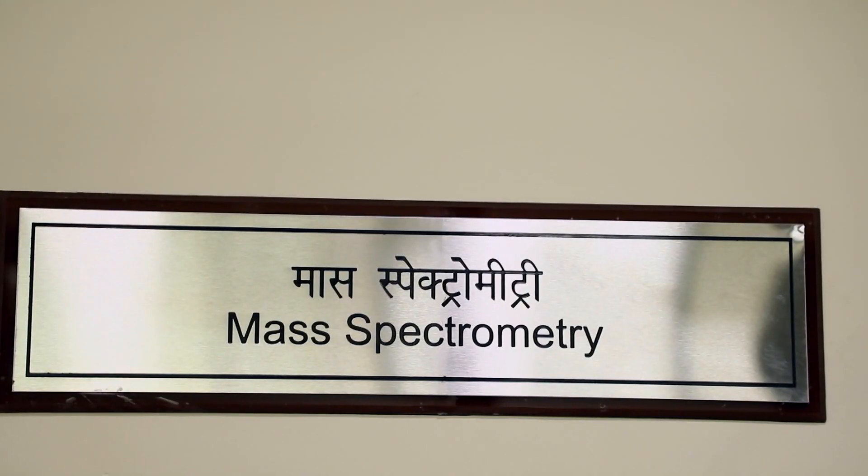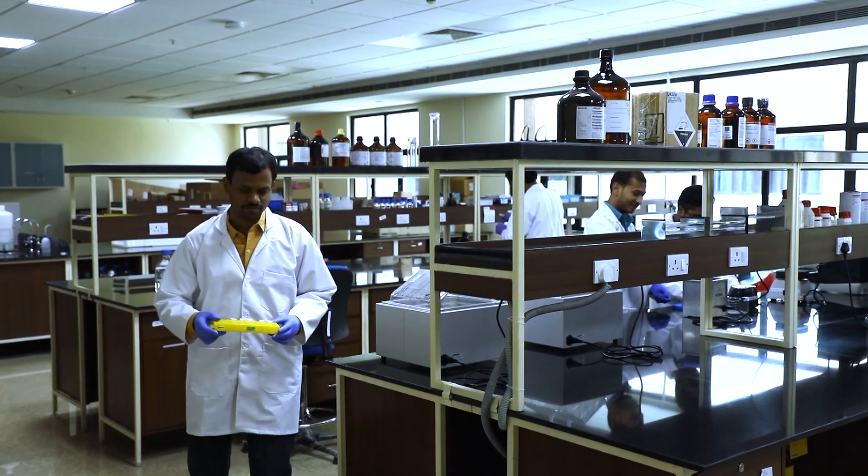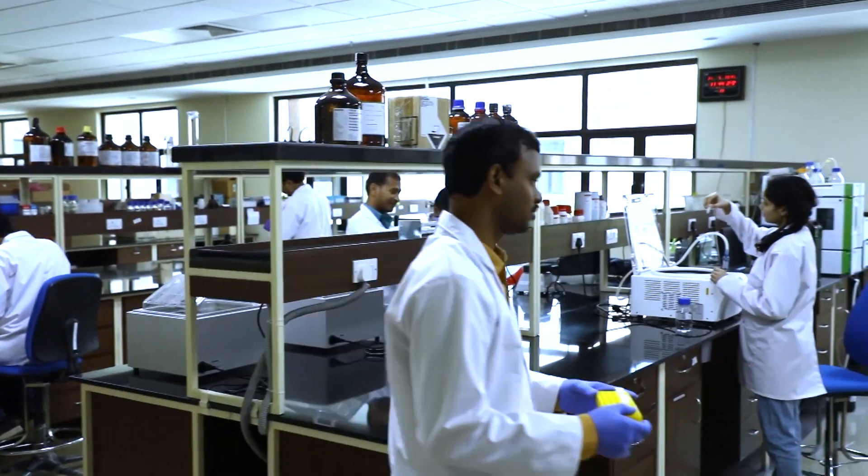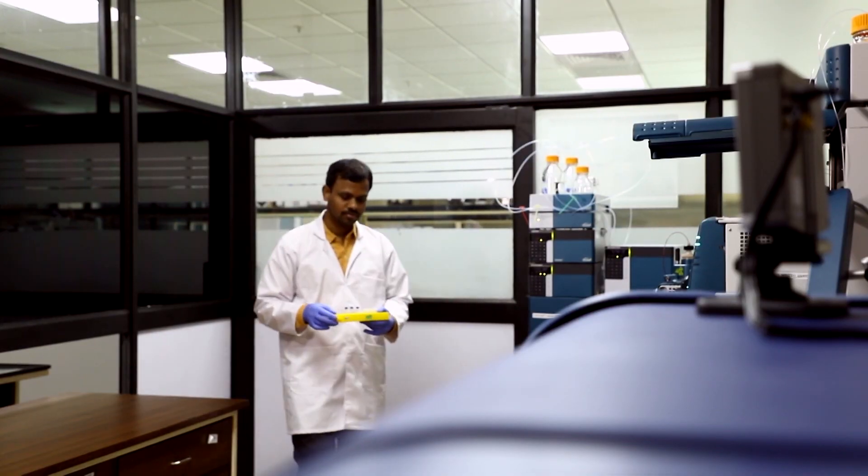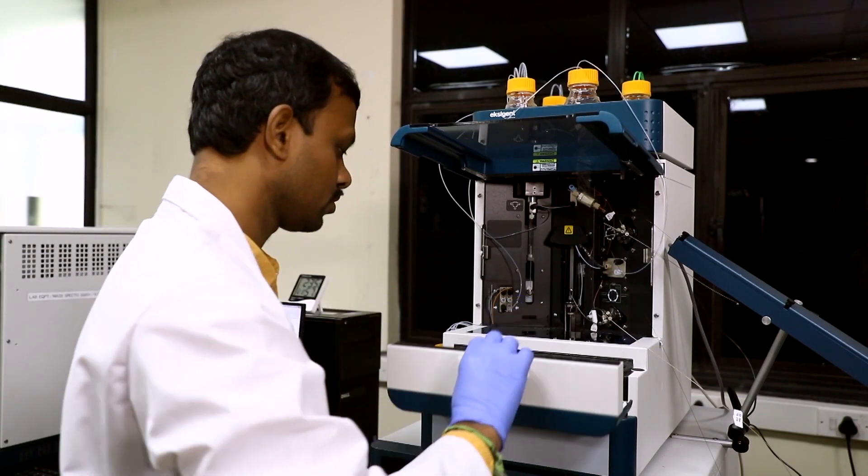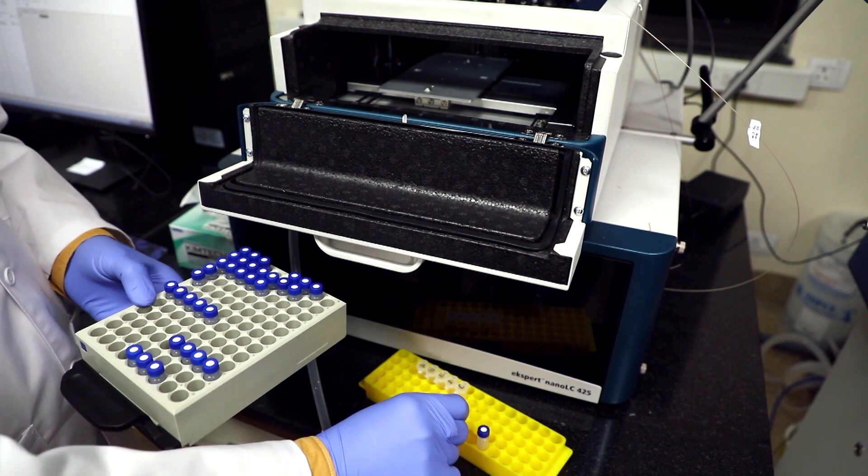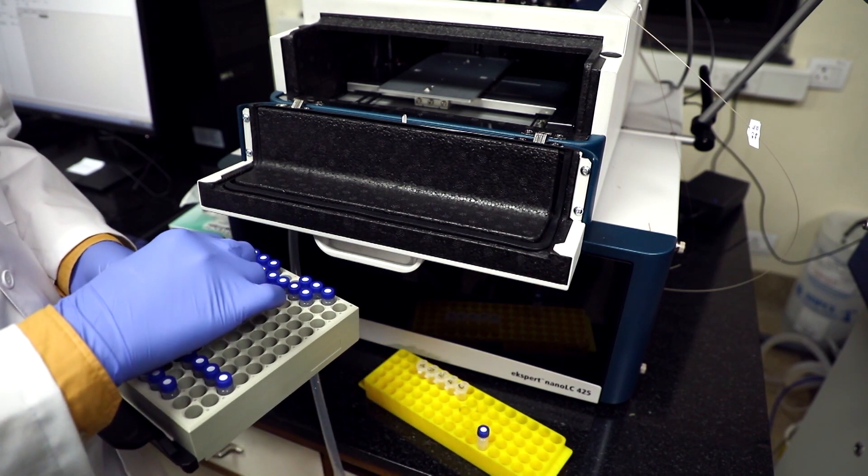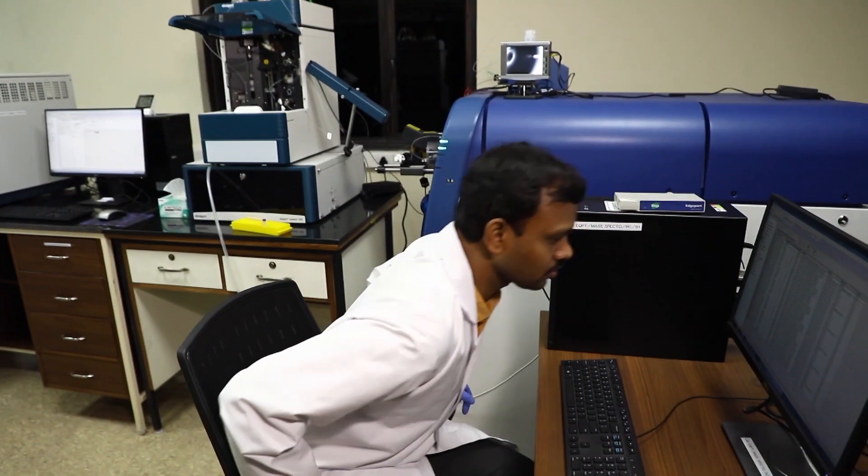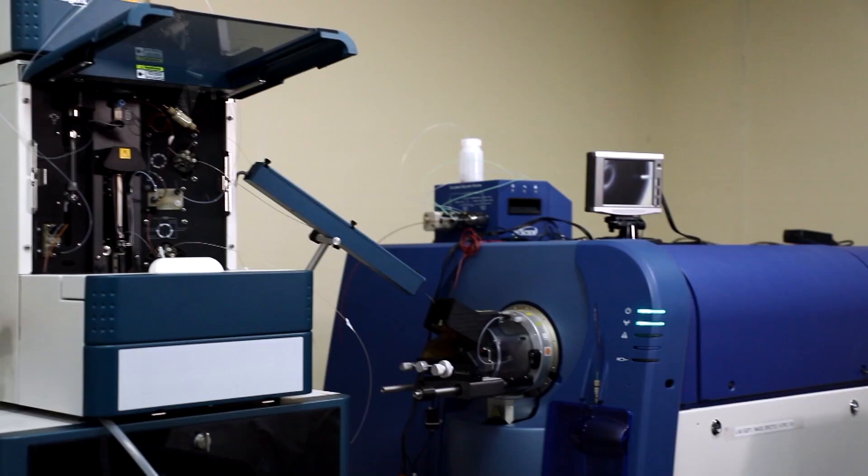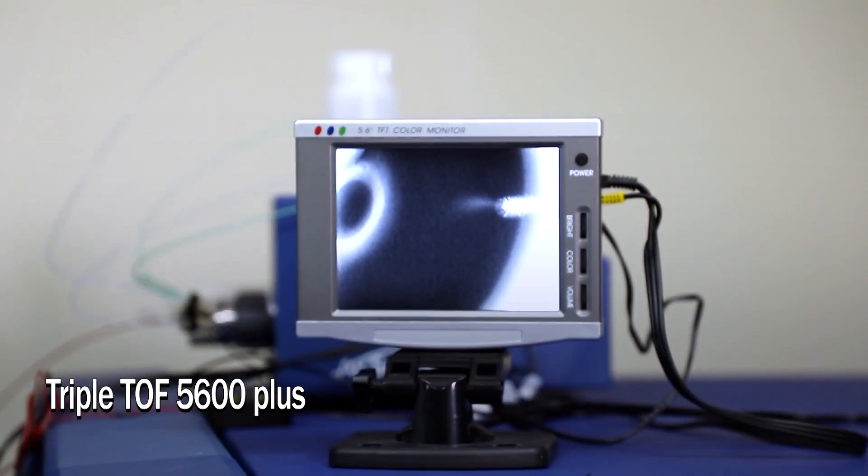Mass Spectrometry is another important facility of ATPC. This facility offers a comprehensive suite of modern instrumentations for the separation, identification and quantitation of a wide range of molecules. At present, the facility maintains three mass spectrometry instruments: triple TOF 5600+, MALDI TOF TOF 5800 and QTRAP 6500+.